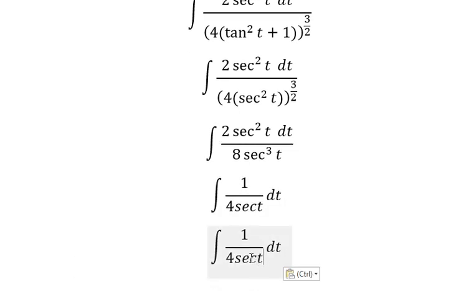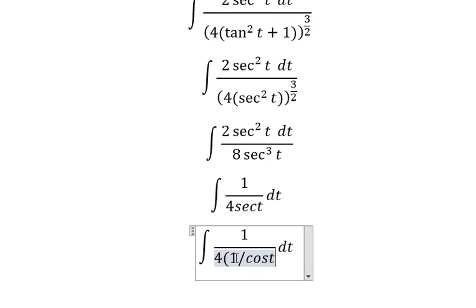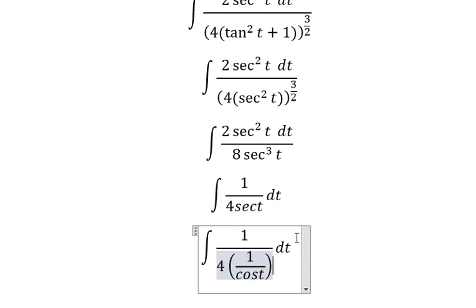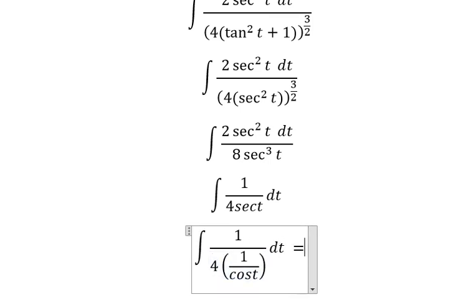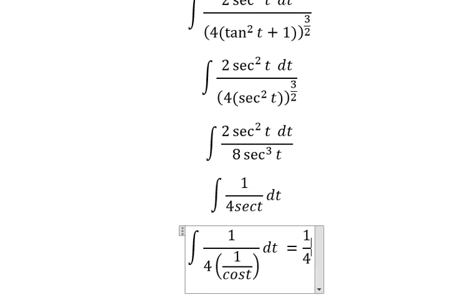Sec t equals 1 over cos t, so we can write 1 over 4 times the integral of cos t.